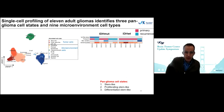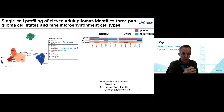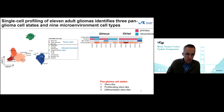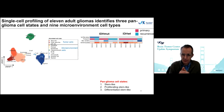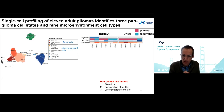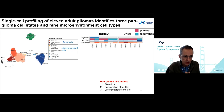To address how recurrent gliomas become more aggressive — and whether resistance mechanisms are genomic or cellular — we started a single-cell profiling effort in the lab. Single-cell profiling is really showing new boundaries and new insights into tumor development. We did single-cell profiling using the 10X platform on 11 tumors, both IDH mutant and IDH wild-type, both primary and recurrent (but not matched primary-recurrences). Within these 11 gliomas, we profiled about 55,000 single cells.